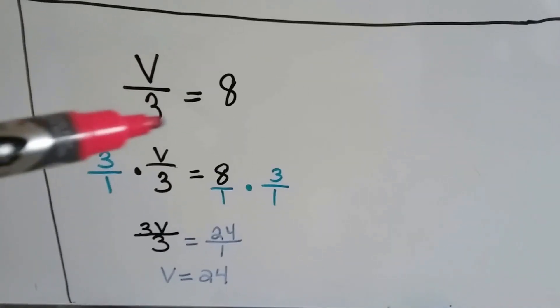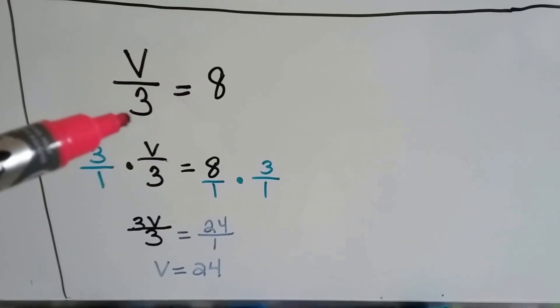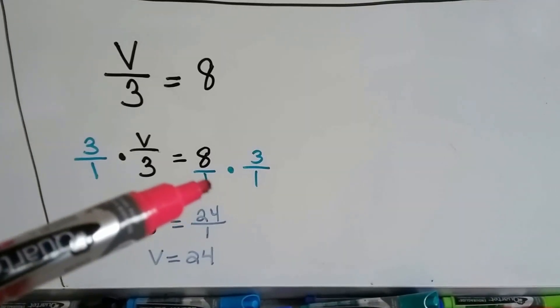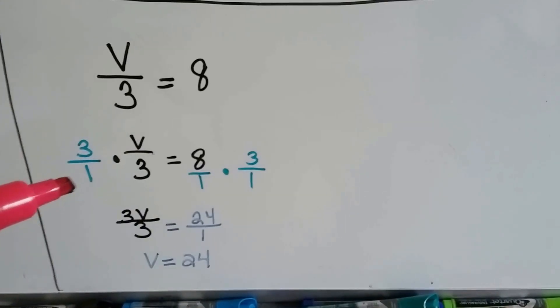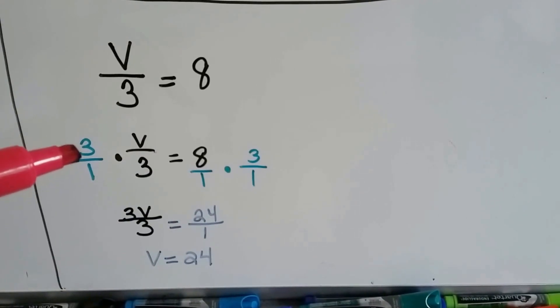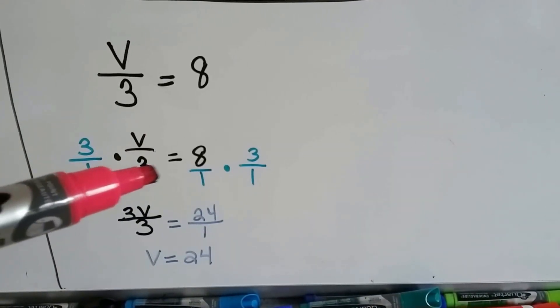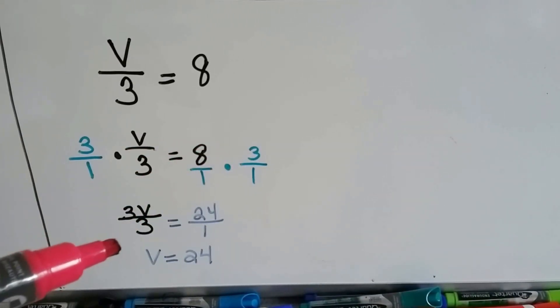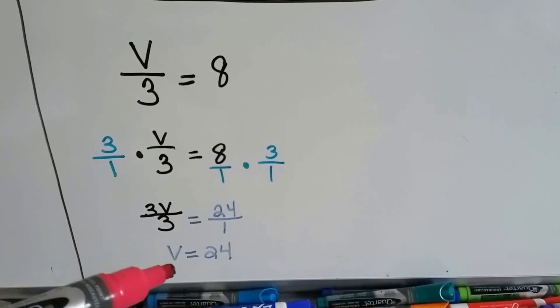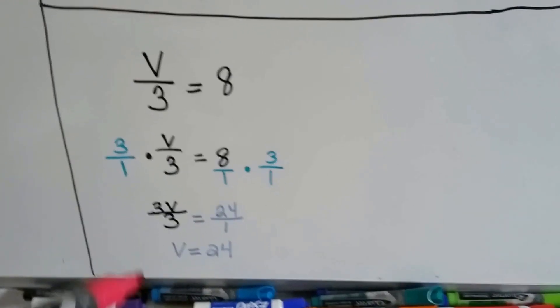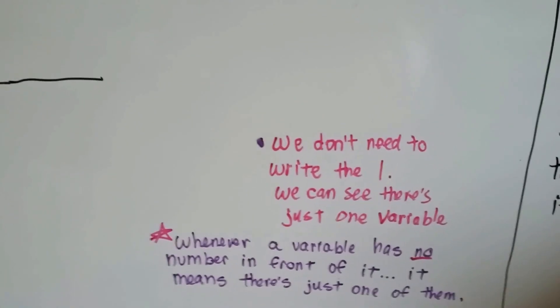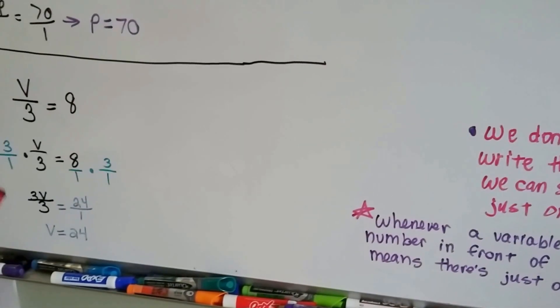One last time. v over 3 equals 8. We're going to multiply both sides by the denominator, 3 over 1. That's going to be an improper fraction over 1, and that's going to be 3 over 1, so we can have them all as fractions. We're going to end up with 3v over 3 equals 24 over 1. We don't have to put the 1 in front of the v at all. We can see there's just one v here.